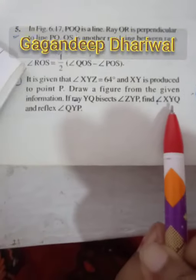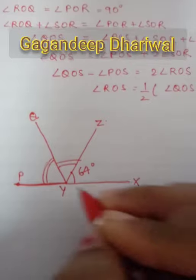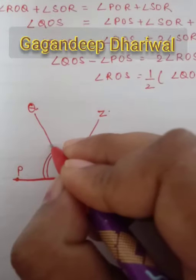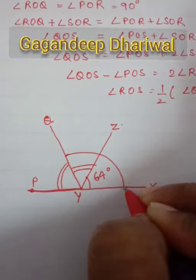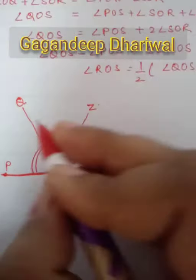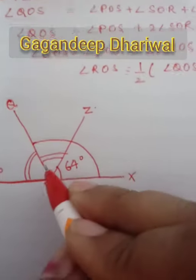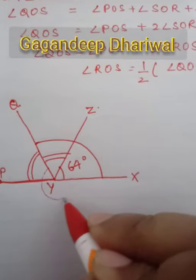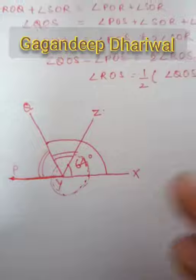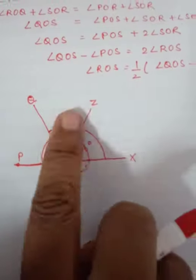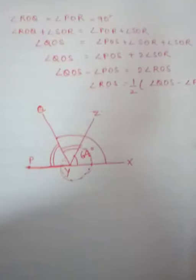Is this clear? Now what is written? You have to find angle XYQ and reflex QYP. Angle XYQ means this entire XYQ. And the reflex of QYP means this much. Yeah, you have to find the entire one.